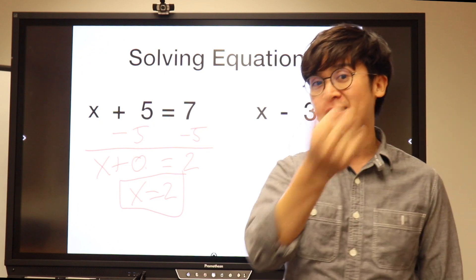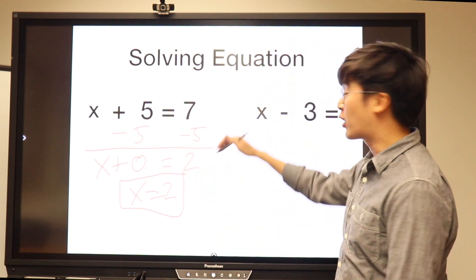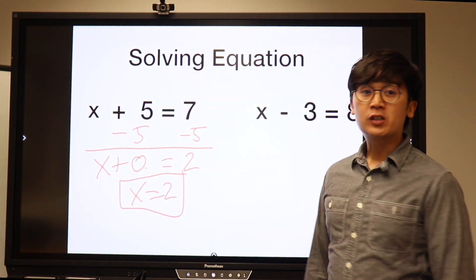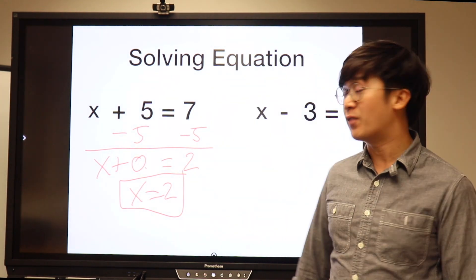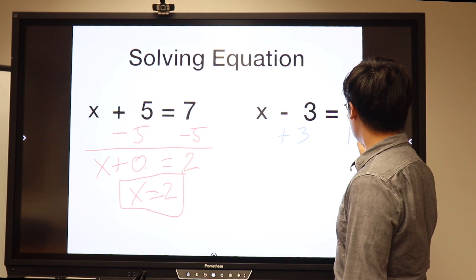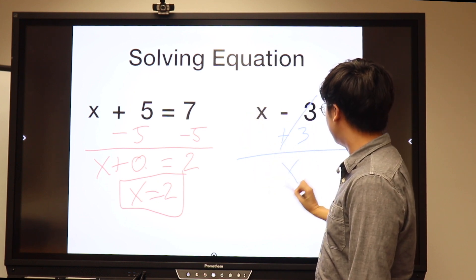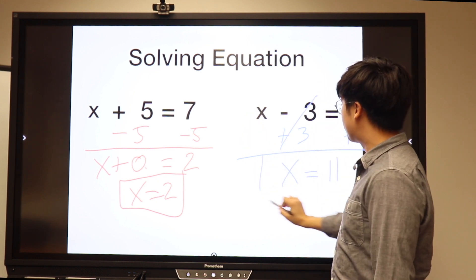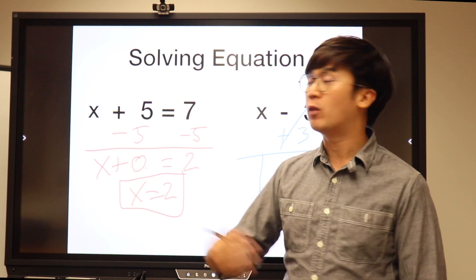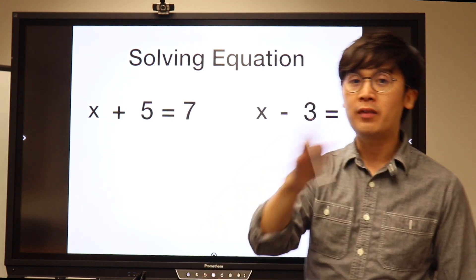I always start with the box problem and then use that equation for students to see the connection. For X minus three equals eight, we find the additive inverse of negative three, which is positive three. Whatever you do on the left, you do on the right — you cancel the numerical value so X is by itself. Eight plus three equals eleven, so X equals eleven. After showing two examples, I ask them to work on similar problems before proceeding to the multiplicative inverse.